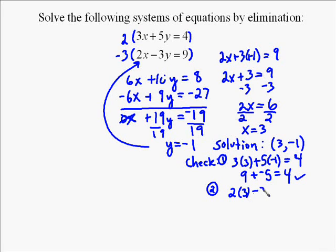So 2 times 3 plus, or minus 3 times negative 1. Does that equal 9? Well, yeah, because 2 times 3 is 6, and negative 3 times negative 1 is a positive 3, and 6 plus 3 does equal 9. So that is a true statement, and so your solution is well recognized.